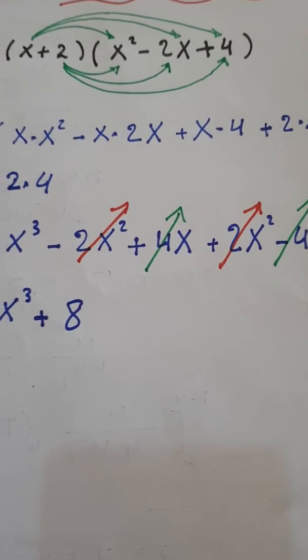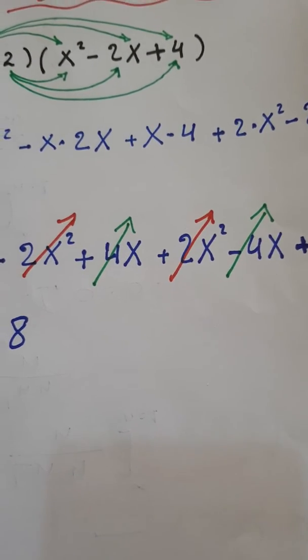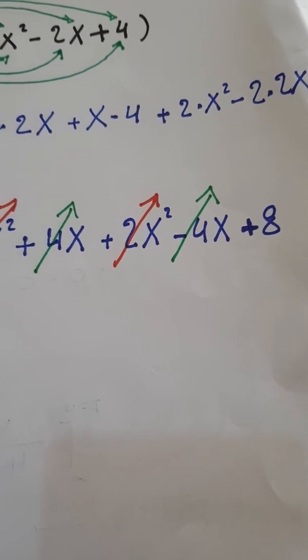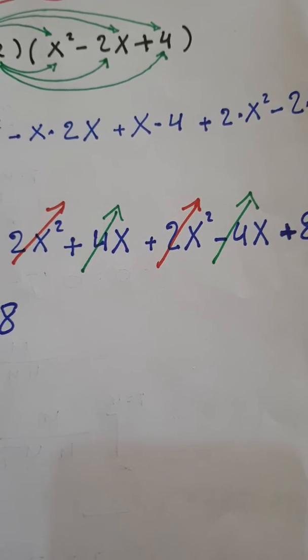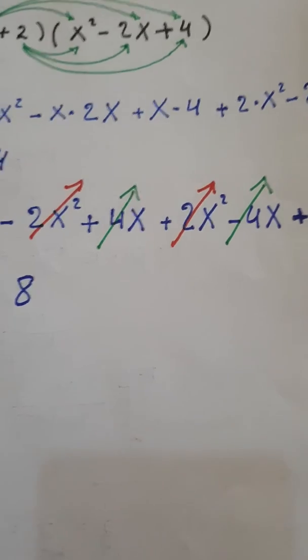And x multiply 4, we have 4x, and 2 multiply x squared, we have 2 squared, and minus 2 plus 2x, and we have 4x, and 2 multiply 4, we have 8.